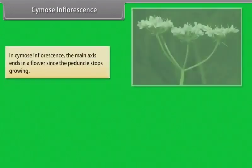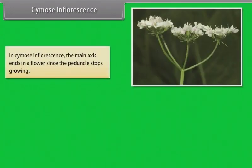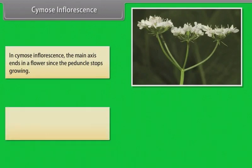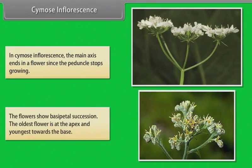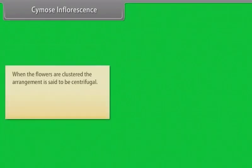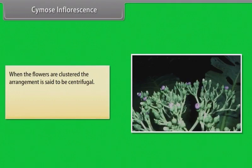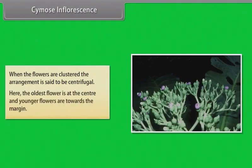In cymose inflorescence, the main axis ends in a flower, since the peduncle stops growing. The flowers show basipetal succession — the oldest flower is at the apex and the youngest towards the base. When the flowers are clustered, the arrangement is said to be centrifugal, where the oldest flower is at the center and younger flowers are towards the margin.